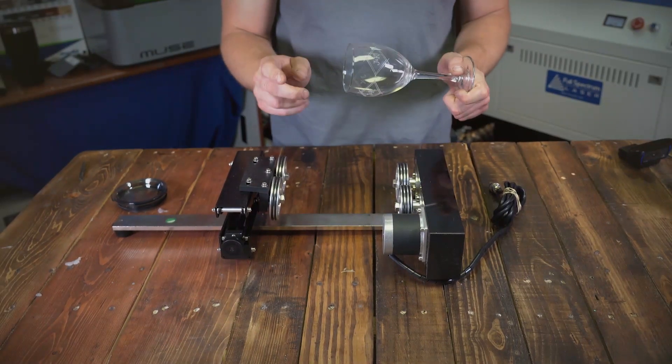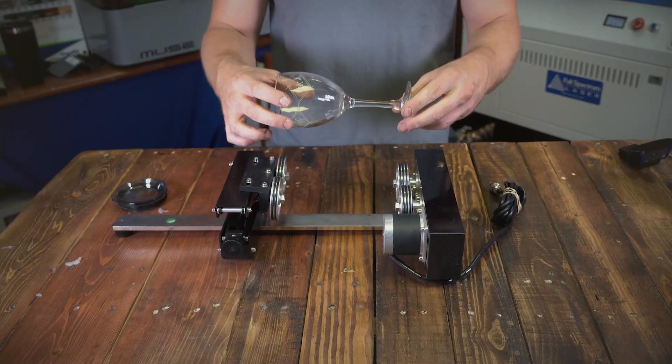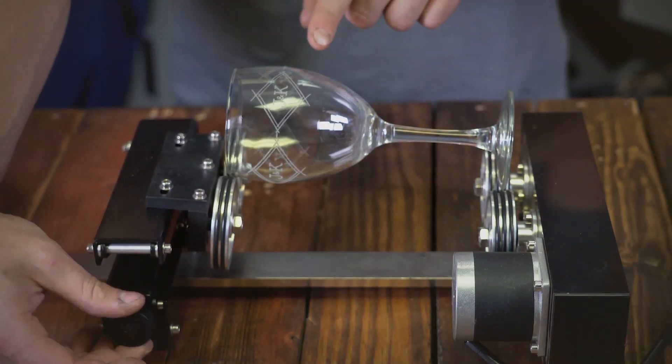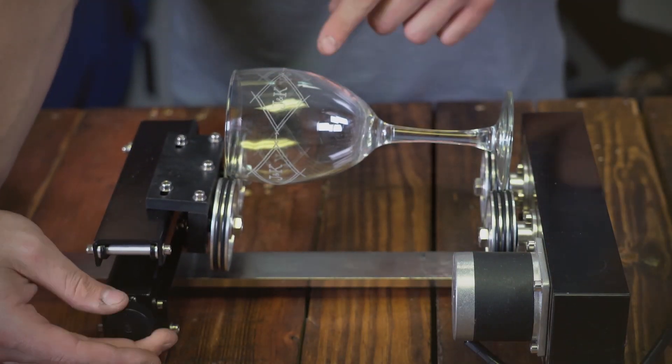When doing glass, you want to use the friction rotary because you cannot use it with the chuck rotary. Again, getting a level is key.